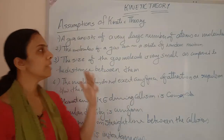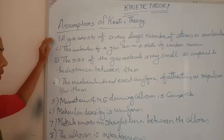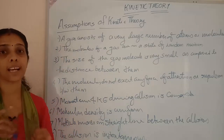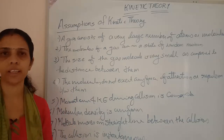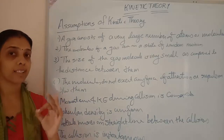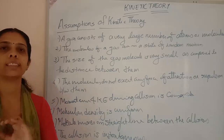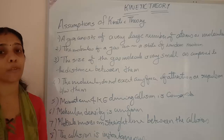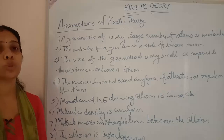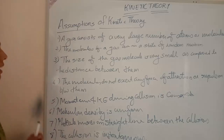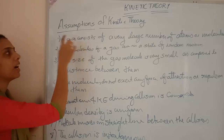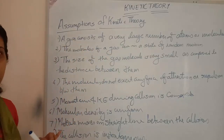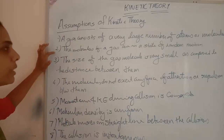You may have already learned this in chemistry as well. The first assumption: a gas consists of a large number of atoms or molecules. In 22.4 liters of gas, there are Avogadro's number of molecules. So the first assumption is that a gas consists of a large number of atoms or molecules.